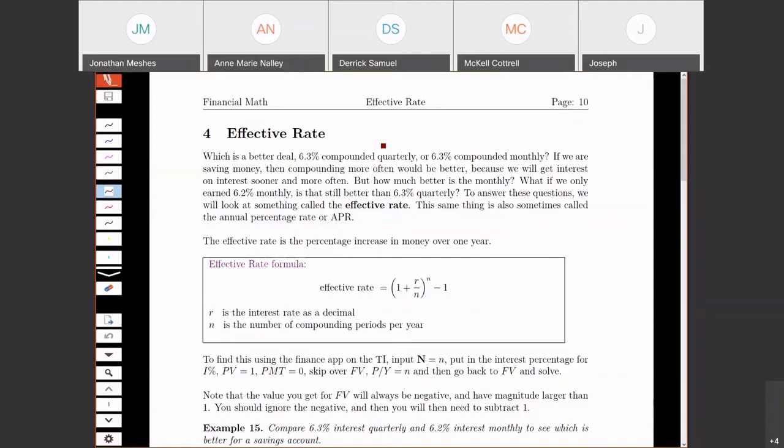So if we start with an easy example: what's a better deal, 6.3% compounded quarterly or 6.3% compounded monthly? When I say better deal, we have to be careful about which one we want. If I'm saving money, I want the most interest. If I'm borrowing money, I want the least. Suppose that we're saving money. Well, then if I compound more often, I'll be getting my interest sooner and more often, and I'll be getting interest on interest more quickly. So obviously the compounded monthly would be better.